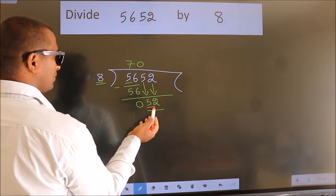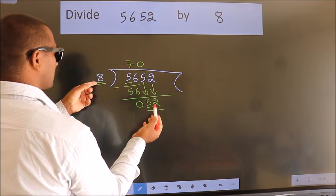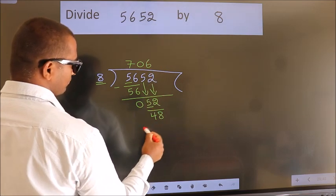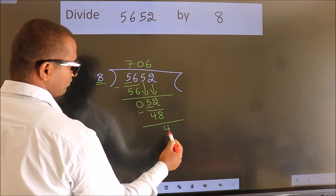A number close to 52 in 8 table is 8 6 48. Now we subtract. We get 4.